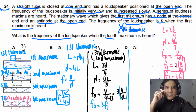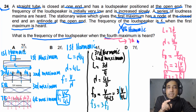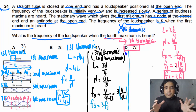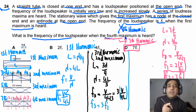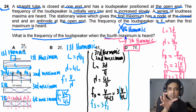In an exam, when you see the 4th maximum for a one-end-closed pipe, recognize it as the 7th harmonic — so the frequency is 7F1. The key distinction is that in a one-end-closed pipe, the number of maxima and the harmonic numbers differ. But in a two-ends-open pipe, they are the same. This difference is critical to understand.